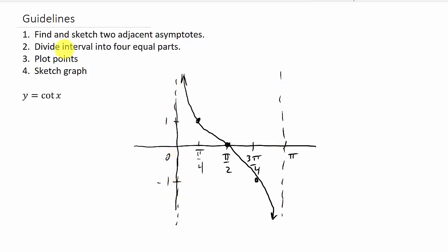And then what we do is we divide it into four equal parts. So once you get your two adjacent asymptotes, in this case 0 and π. So to find the asymptotes, let me say a little bit more about that. You take whatever you're taking the cotangent of, you're going to set that equal to 0, and you're going to set that equal to π. And then you'll solve for x.